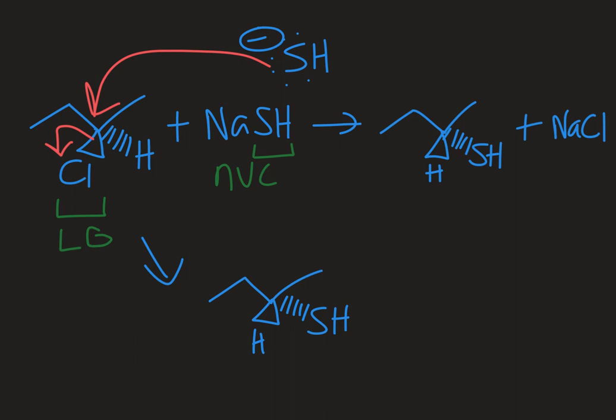If I had a tertiary starting material, then that would go SN1—too crowded for backside attack. If I had primary and secondary, probably SN2, but you might see SN1 on a secondary. It's sort of in the middle, moderately hindered.